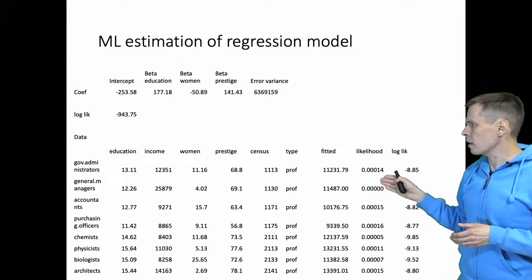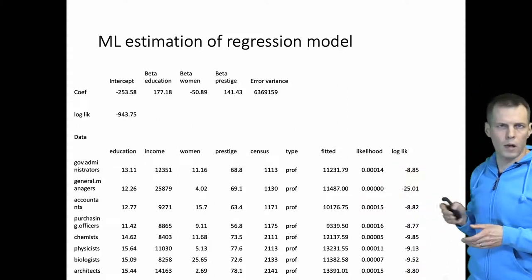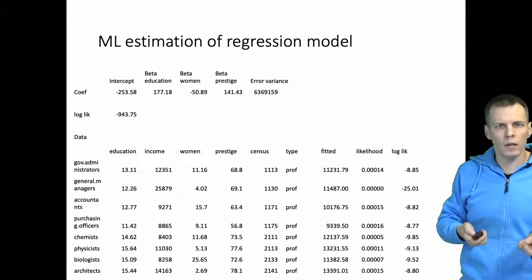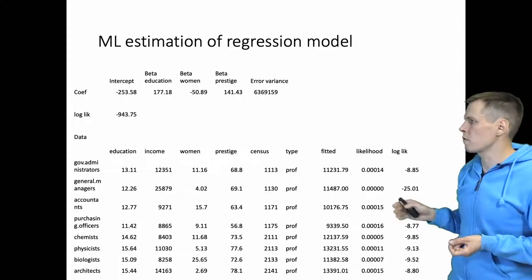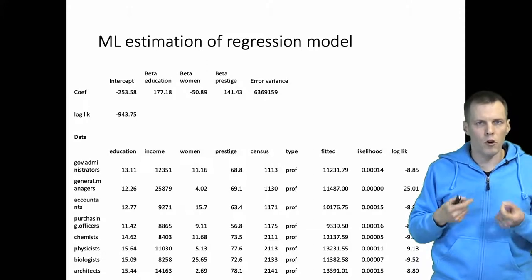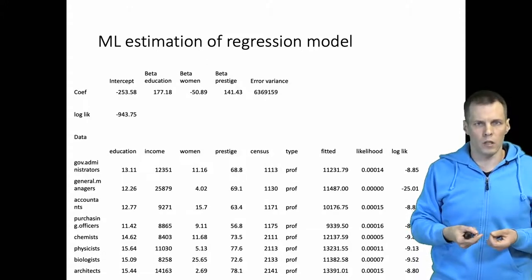So how do we calculate the likelihood and how do we calculate the log likelihood which is maximized? The idea of a likelihood calculation for an individual observation is that we first make the assumption that the error term is normally distributed in the population.